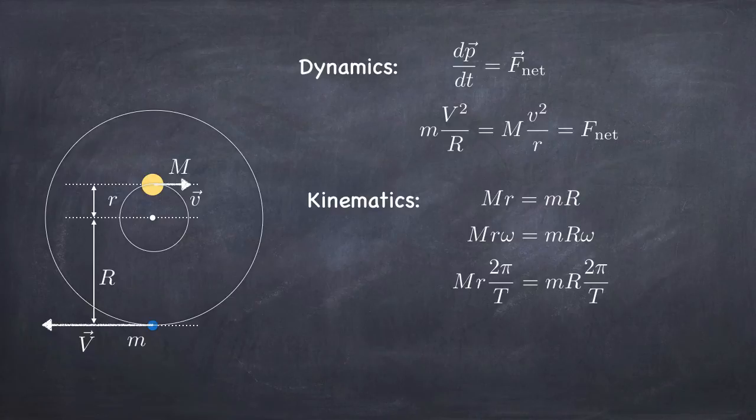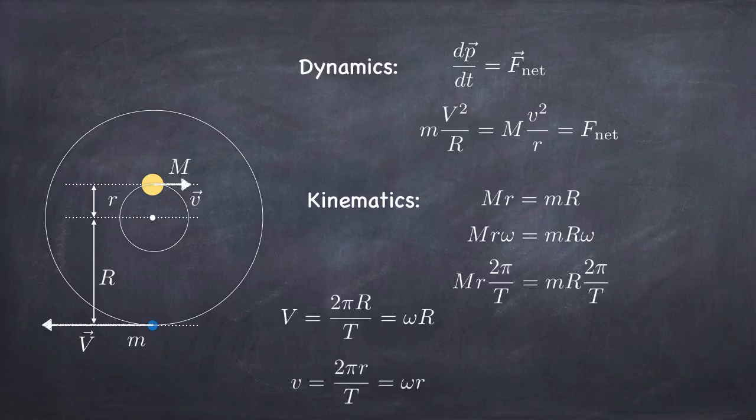Now notice what we've got here. 2π little r is the circumference of the sun's orbit divided by the time. And then on the other side, we've got 2π big R. That's the orbit, the circumference of the planet's orbit divided by time. So what we really have is the velocity of the planet and the velocity of the star. So if you put that together, you get that the mass of the planet times its velocity has the same magnitude as the mass of the star times its velocity.